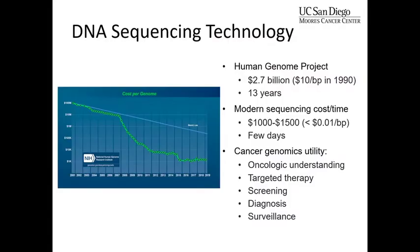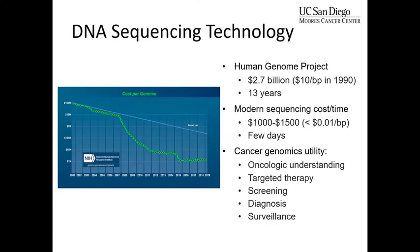The whole reason we can even have these discussions today about ctDNA technology is because of the revolution in DNA sequencing. The human genome project took 13 years and almost three billion dollars to sequence one genome. Now basically that same amount of work can be done in a few days for about a thousand dollars. It's a remarkable improvement.